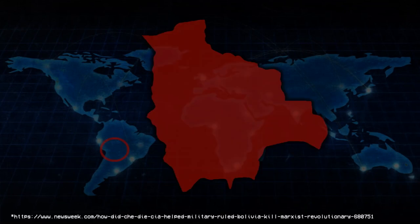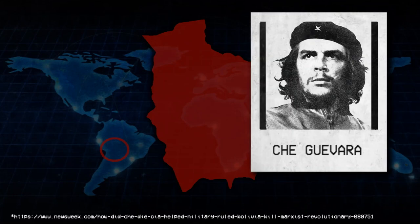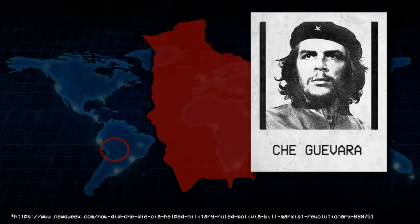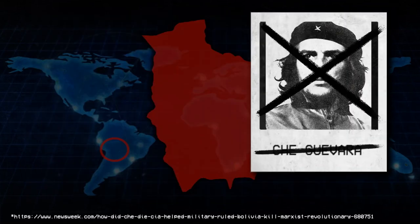1968. Bolivia. A CIA-organized military operation captures the legendary guerrilla Che Guevara. The CIA wants to keep him alive for interrogation, but the Bolivian government quickly executes him to prevent worldwide calls for clemency.